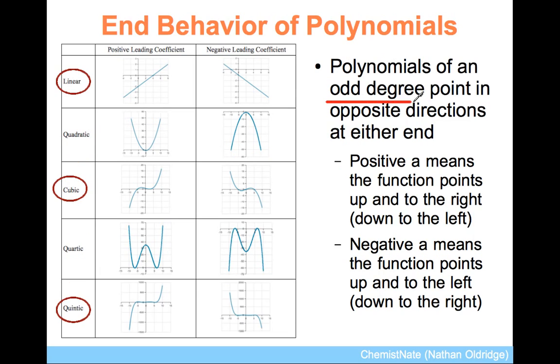For an odd degree polynomial, it will point in opposite directions. A linear function, x to the 1, is an odd degree, and so if it points down to the left, it points up to the right. This cubic function points down to the left, and up to the right. This quintic function points down to the left, and up to the right. This is always true for a positive leading coefficient on an odd degree polynomial.